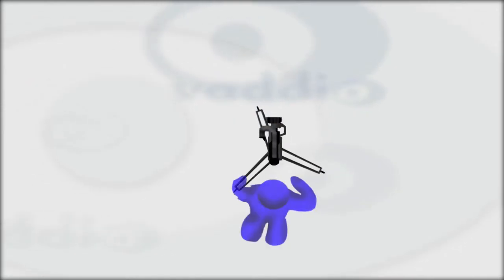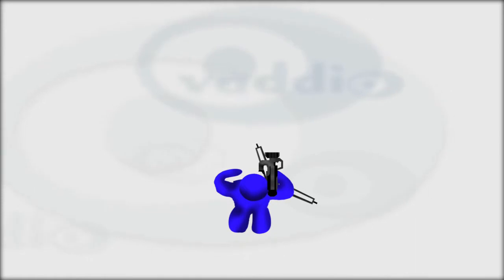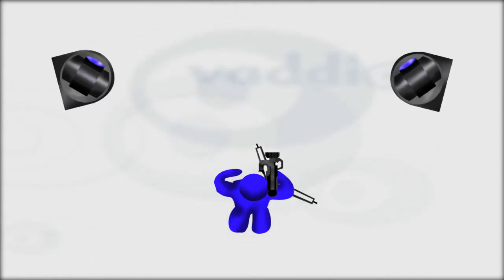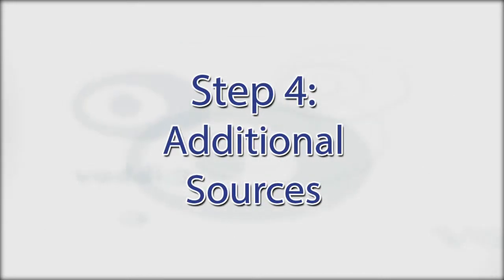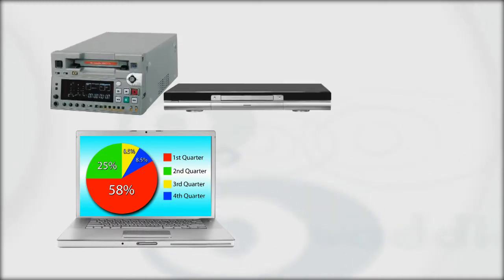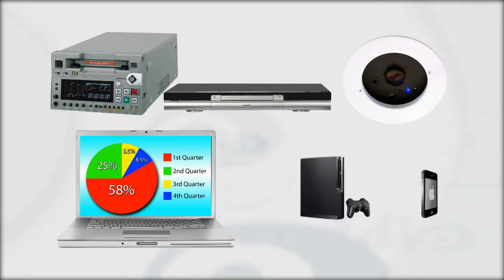Does the application require a camera operator using a camera mounted on a tripod for following the presenter? If so, place the robotic cameras at other locations where a camera operator is not needed. What other sources will be required as part of the camera control system? Main items to consider include computer sources such as PowerPoint or website content, video playback such as DVD players or VCRs, and stationary cameras such as document cameras or other video feeds.